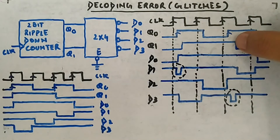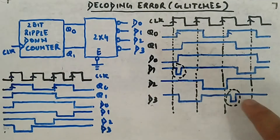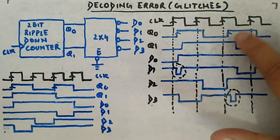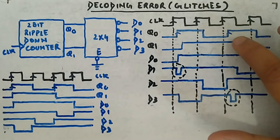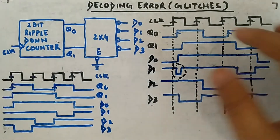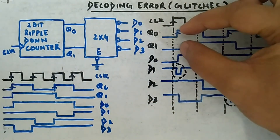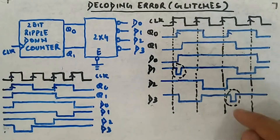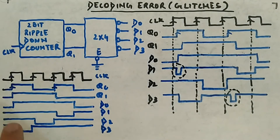Momentarily 10 is occurring, which means D2 should be activated but instead D3 is temporarily activated. Then momentarily 11 occurs, so D3 is activated for a short duration. So due to these delays, there is a momentary 10 here causing D1 to get activated, and momentarily 11 here causing D3 to get activated. Ideally it should not produce these short-duration glitches.